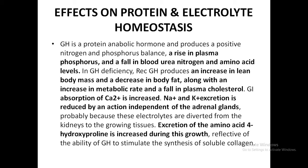Effects of GH on protein and electrolyte homeostasis: GH is an anabolic hormone that produces a positive nitrogen and phosphorus balance, a rise in plasma phosphorus, and a fall in blood urea nitrogen. In GH deficiency, giving recombinant GH increases lean body mass, decreases body fat, increases metabolic rate, and lowers plasma cholesterol — but only in GH deficiency. Gastrointestinal absorption of calcium is increased, sodium and potassium excretion is reduced independent of the adrenal glands, and urinary hydroxyproline excretion is increased, reflecting GH's ability to stimulate synthesis of soluble collagen.